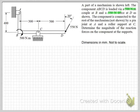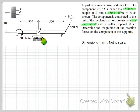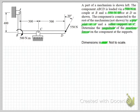We have a pin joint at A and a roller support at C. We'll need that information when drawing our free body diagram. We're asked to determine the magnitude of the reaction forces on the component at the supports. Note that the dimensions on our diagram are in millimeters.